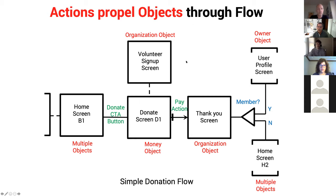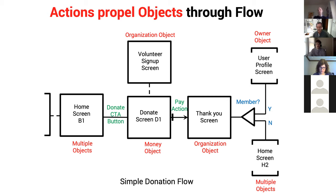If you have the smallest number of objects and the smallest number of actions, you will have the shortest flows. If you have the shortest possible flows, you will be keeping cognitive load down. You can see how the grammar is operating at the flow level. In the classroom, I actually teach flow before visualization — grammar, flow, then go back to visualization. Game theory is second semester.